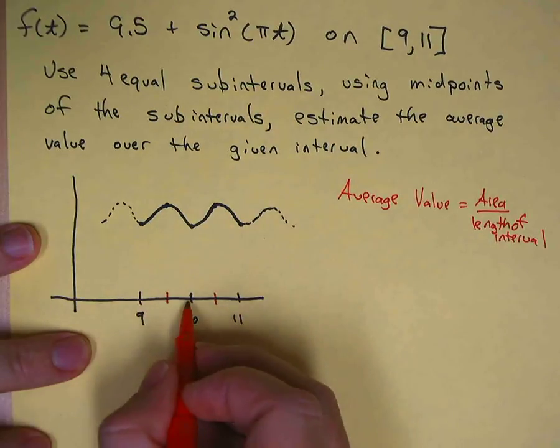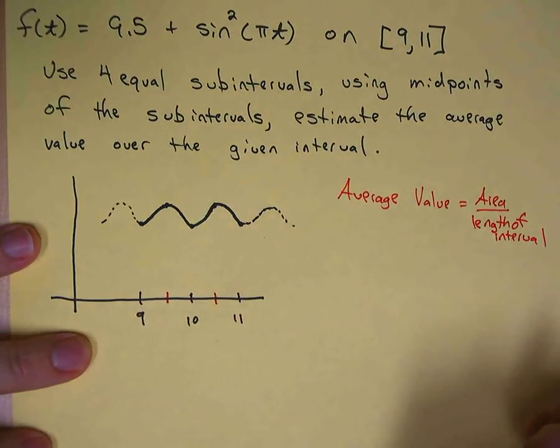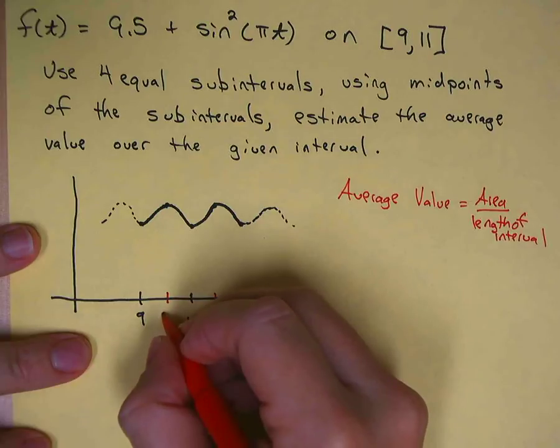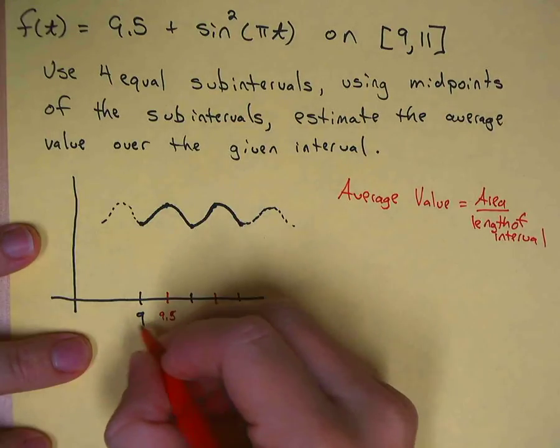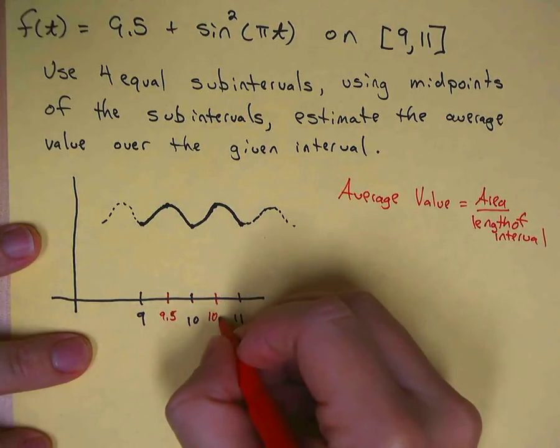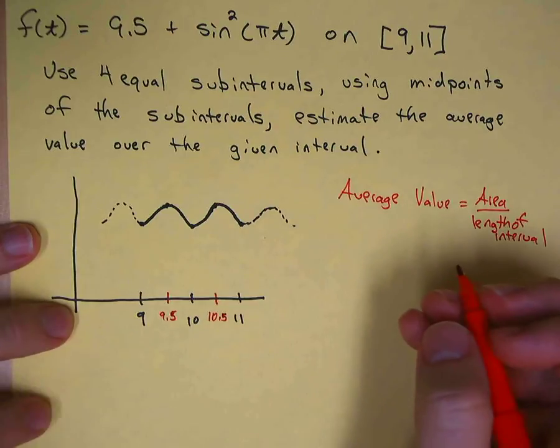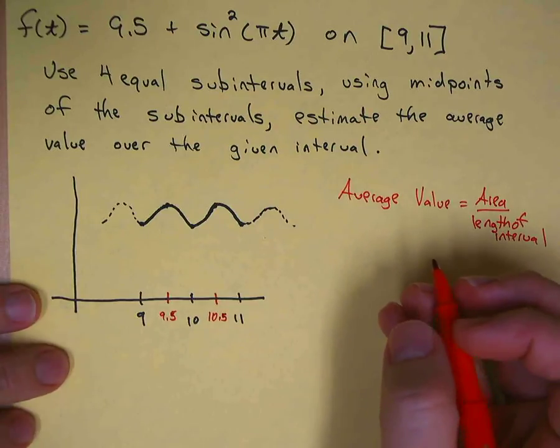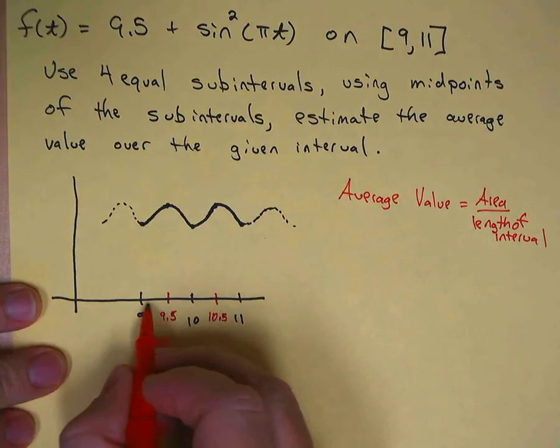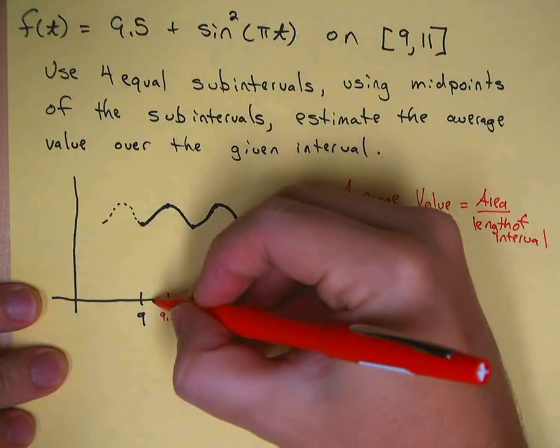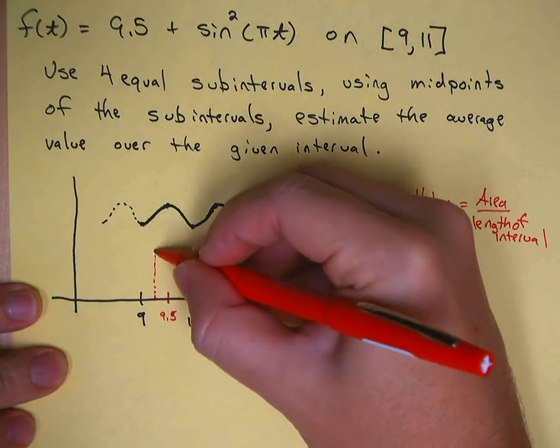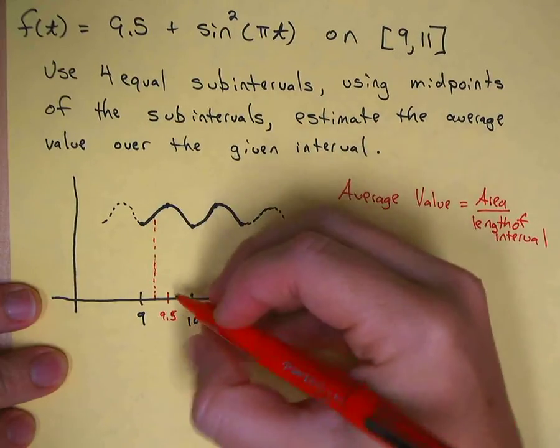So here to here and so on. There's four subintervals, which means that here is 9.5, then 10, then 10.5. Now using midpoints in each one of these intervals, we need to find the midpoint between 9 and 9.5 to use as our first height of this rectangle. That would be 9.25.